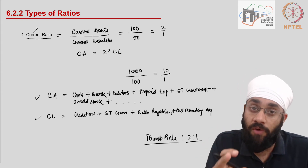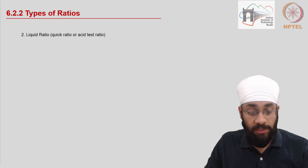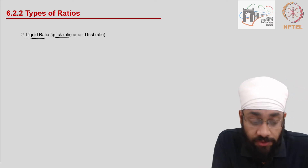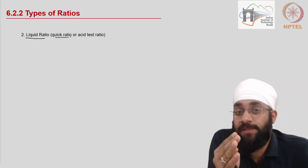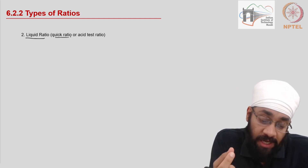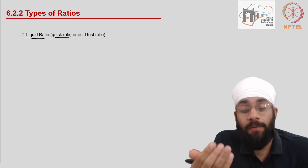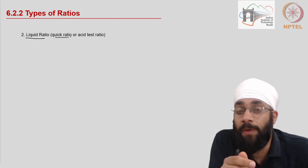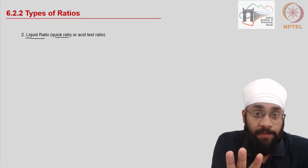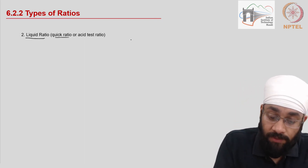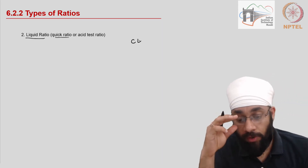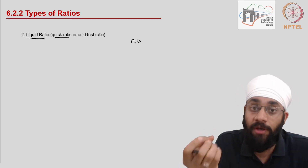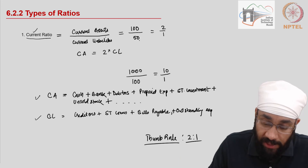The second indicator is called the liquid ratio, also called the quick ratio or acid test ratio. The purpose of this second indicator is to be more stringent compared to the current ratio. The current ratio takes into account all current assets to pay all current liabilities. However, it is possible that in order to pay all current liabilities, we may not be able to get all current assets converted into cash.